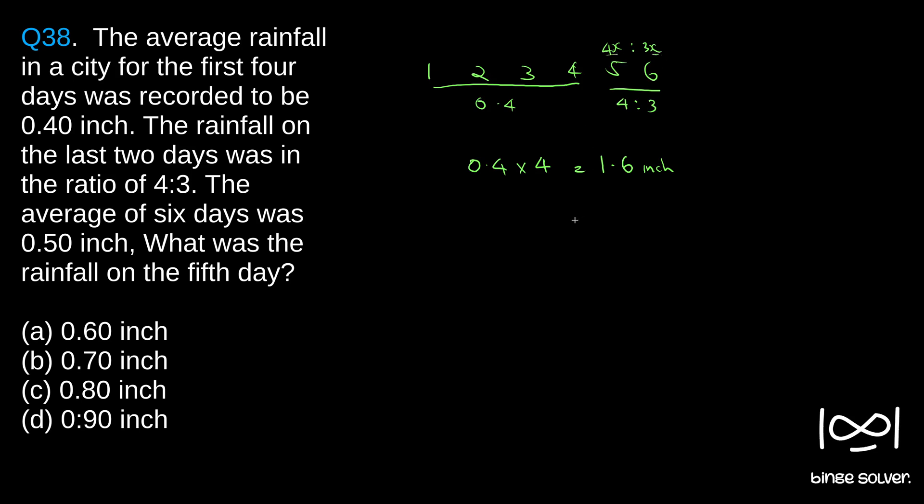The average of six days was found out to be 0.5 inch. So the total rain will be, since we already got the total rain that fell in four days was 1.6 inch, 1.6 plus 4x plus 3x, divided by the total number 6, equals the average which is 0.5.